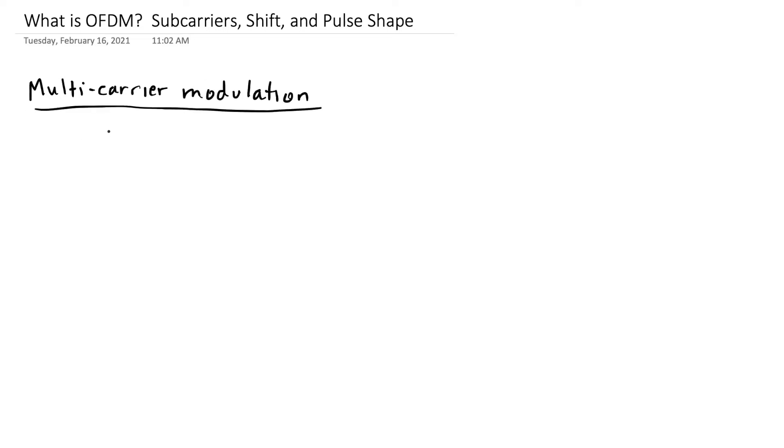In FSK, we use a single basis function at each of many frequencies. In QAM, we use two basis functions, a sine and a cosine, at the same frequency. Multi-carrier modulation is the combination of the two.